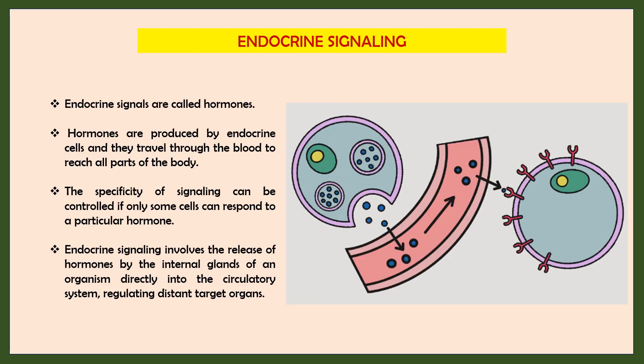Next is endocrine signaling, which occurs over long distances. It makes use of endocrine cells that secrete their signal molecules — called hormones — directly into the bloodstream. The blood carries these molecules far and wide, allowing them to act on target cells that may lie anywhere in the body. The signaling molecules act on target cells distantly located from the site of synthesis. Examples include testosterone, progesterone, gonadotrophins, releases from the adrenal glands, and insulin from the pancreas.